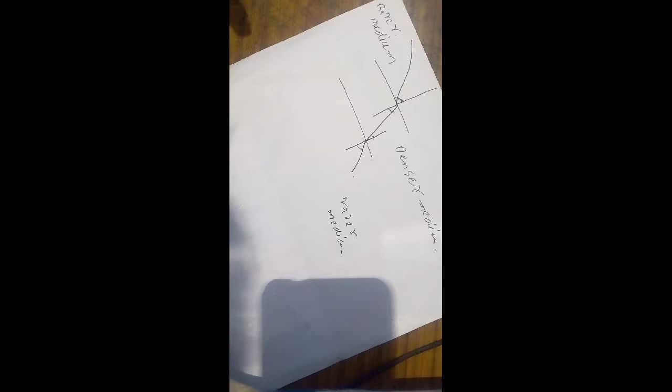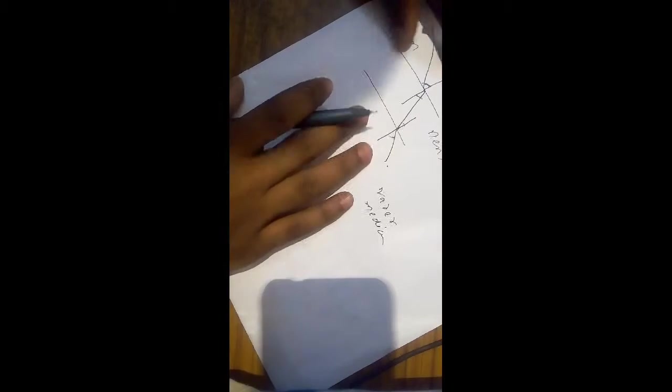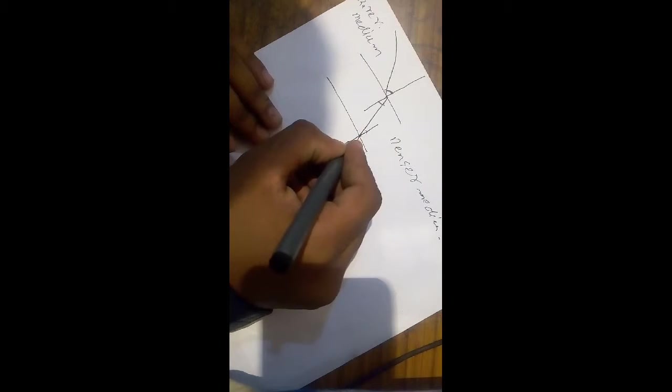It is greater in the rare medium and it is slow in the denser medium. Now the question is, why does light traveling from rare to denser medium move away from normal, and while traveling from denser medium, it moves toward the normal?